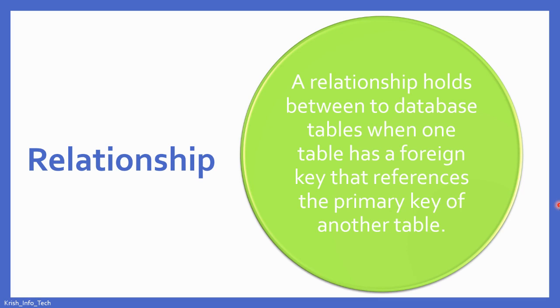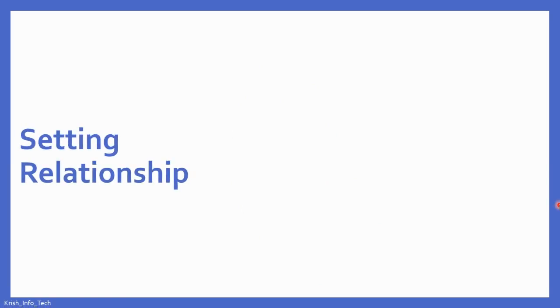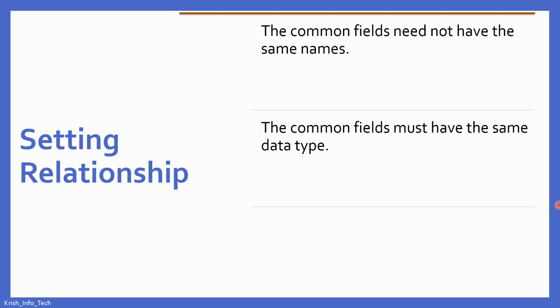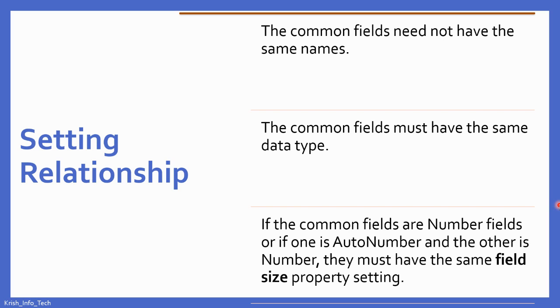About primary key and foreign key, I will explain later. Before setting the relationship, we should follow some rules. The first one is the common fields need not have the same names — the field names can be different. But the common fields must have the same data type. If the common fields are number, or if one is auto number and the other is number, they must have the same field size property. How to set field size properties, we have already learned in the first chapter.